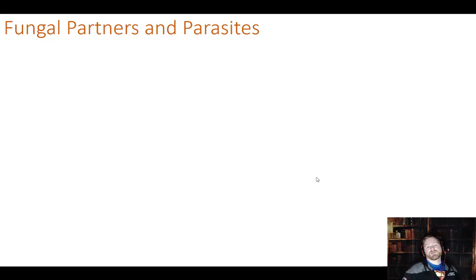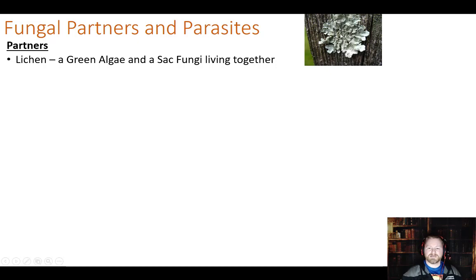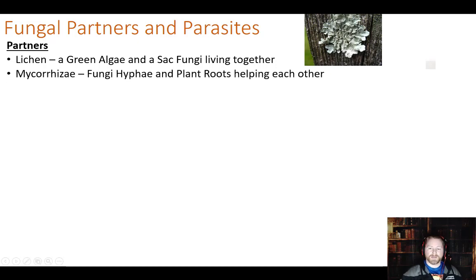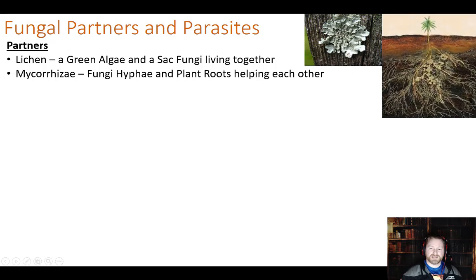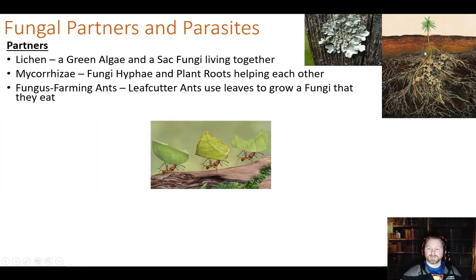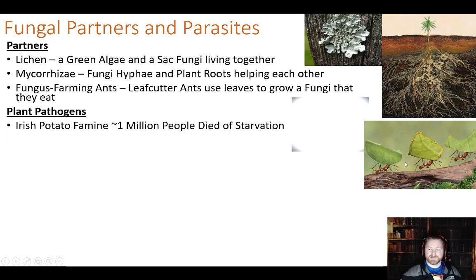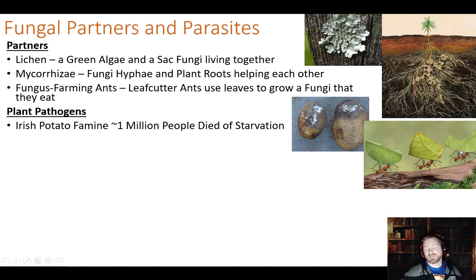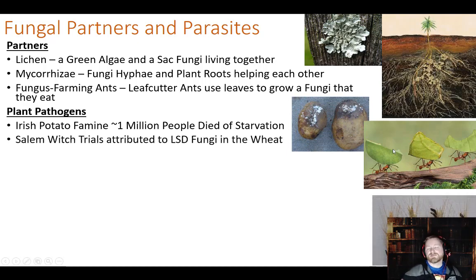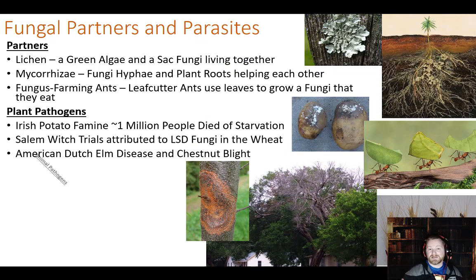Some different types of fungal partnerships: lichen is a blue-green algae and a fungus growing together - one produces water, the other produces glucose, and they share that with each other. Lichen grows on trees all over the place. Mycorrhizae are the fungal and root relationships that help trees and other types of plants grow. And there are fungal farming ants, also known as leafcutter ants - they actually don't eat leaves. They collect the leaves, bring them into the ant hill, use the leaves to grow a fungus, and then eat the fungus.